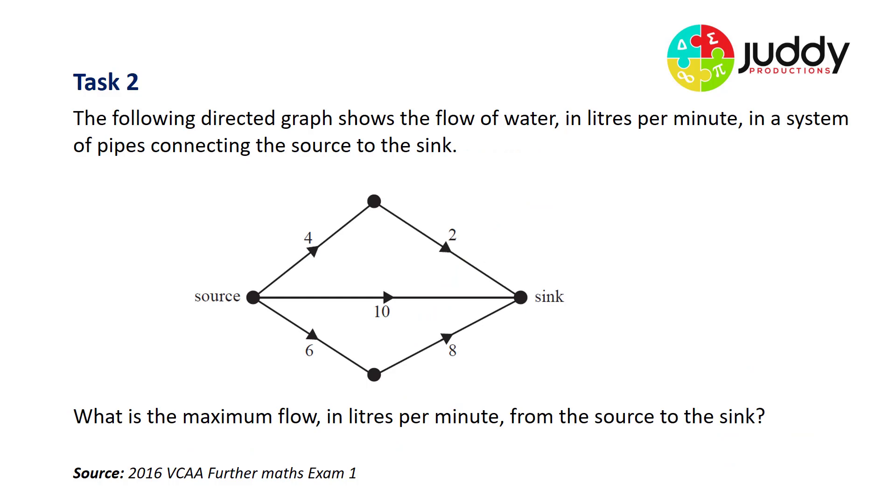Task number two. The following directed graph shows the flow of water in litres per minute in a system of pipes connecting the source to the sink. What is the maximum flow in litres per minute from the source to the sink? When attempting these problems there is an element of trial and error. However, I do recommend cutting edges nearest the source first of all.